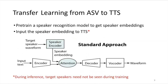Here's an illustration of the approach. We pre-train a speaker recognition model to get speaker embeddings, then input those speaker embeddings to TTS. The speaker encoder is totally separately trained. During inference, target speakers don't have to be seen during training. We can do this in a zero-shot manner by just getting the speaker embedding using a little bit of the target speaker's speech and inputting that into the TTS model along with the text.